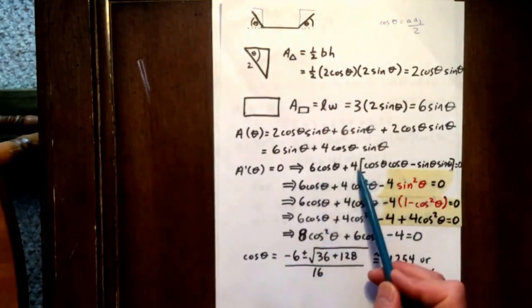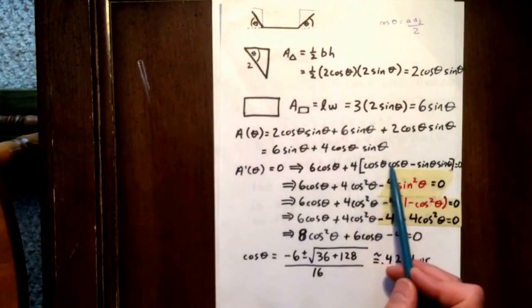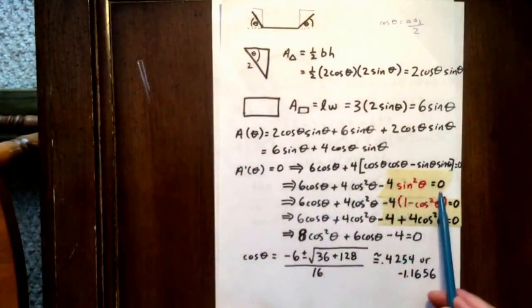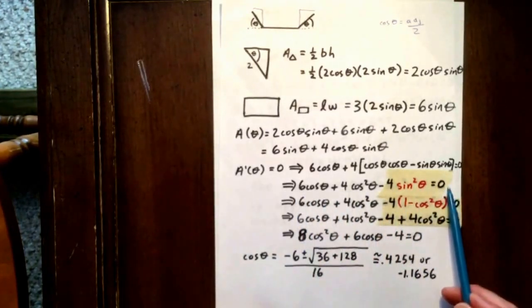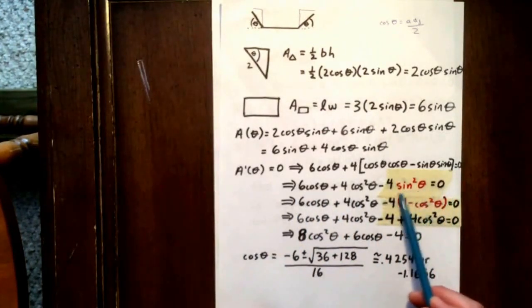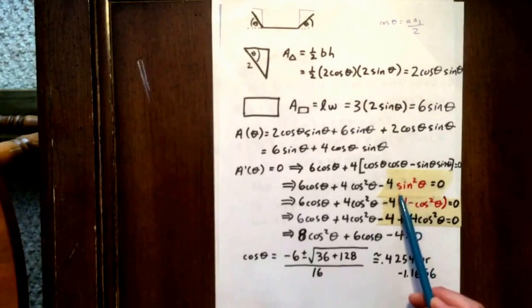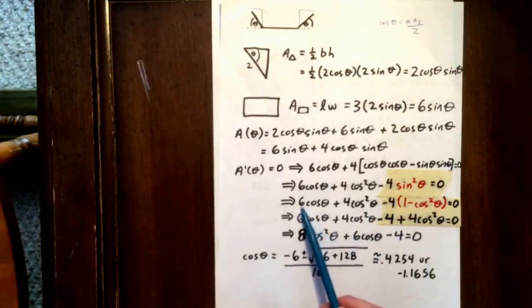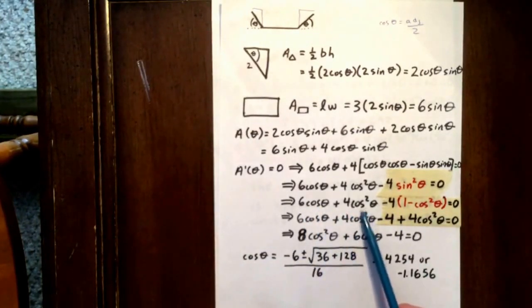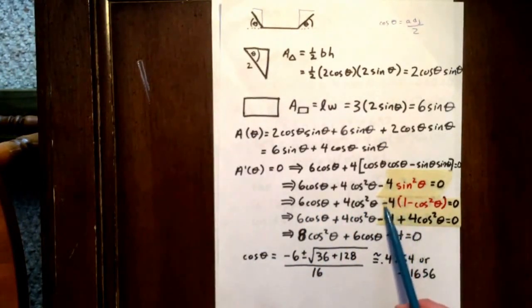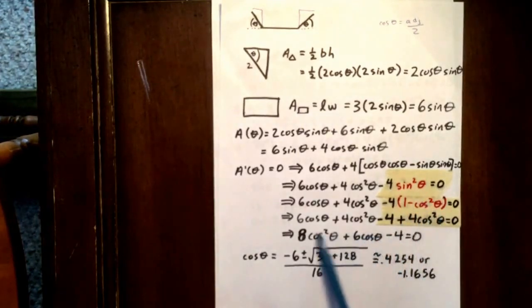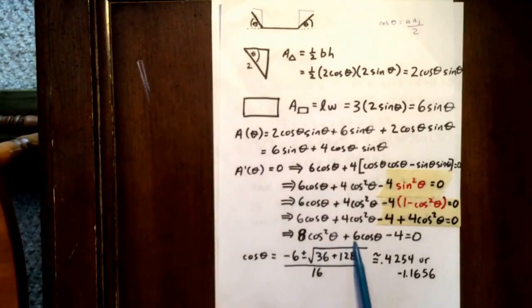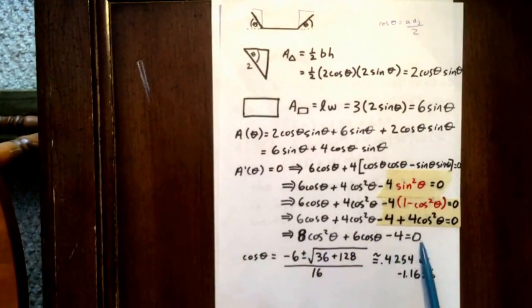When we distribute, we have positive 4 cos squared theta and negative 4 sine squared theta. Now, we know our trig identities. Sine squared theta is the same as 1 minus cos squared theta. So we have 6 cos theta plus 4 cos squared theta minus 4 plus 4 cos squared theta. Collecting all our like terms, we get 8 cos squared theta plus 6 cos theta minus 4 equals 0.